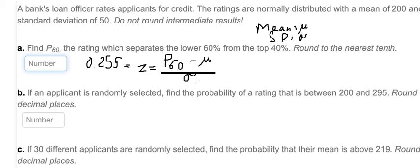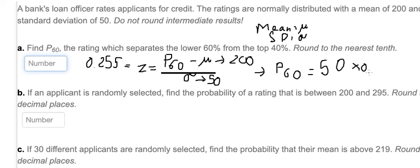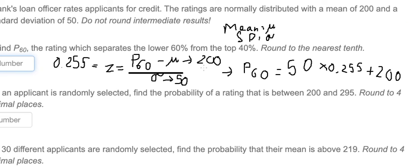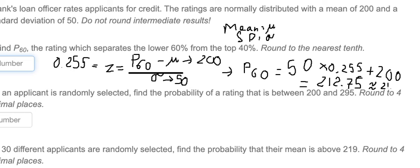Now we have the standard deviation of 50 and the mean of 200. We can find b60: that should be 50 multiplied by 0.255, plus 200. We calculate this number and get 200 plus 12.75, which we approximate as 212.8 because they want to round to the nearest tenth.